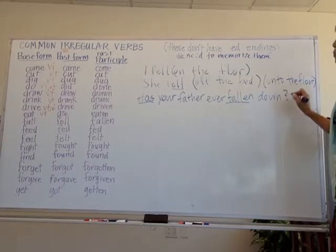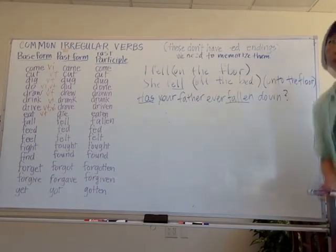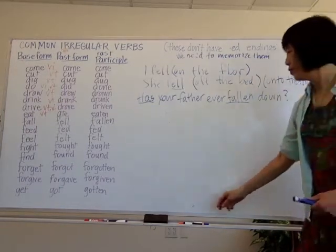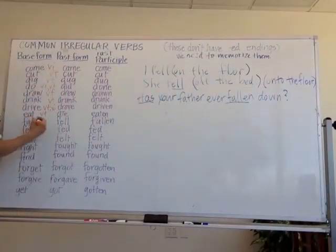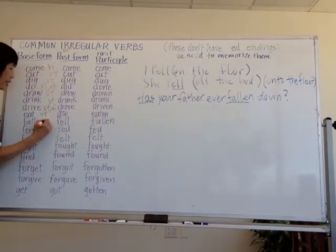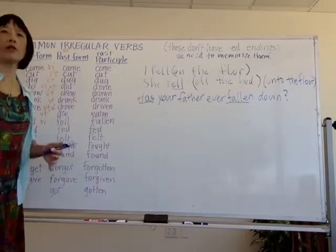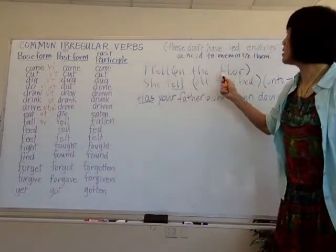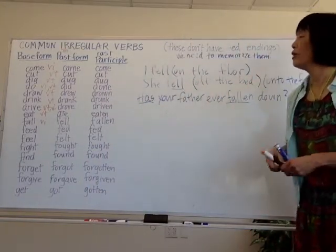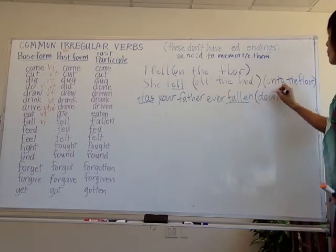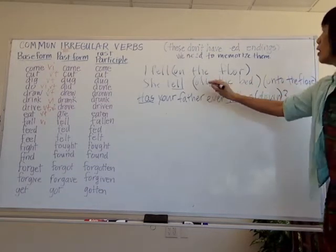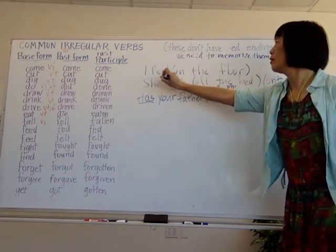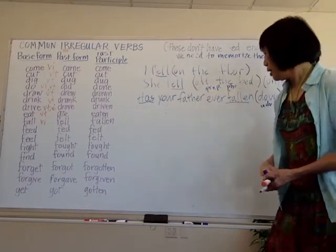Now, if we look at this verb, we can tell if it's transitive or intransitive. 'Fall' is intransitive — without any object. When you use the word 'fall,' you cannot have a direct object. It has to be followed by a prepositional phrase or an adverb. Either an adverb or a prepositional phrase can follow 'fall.'